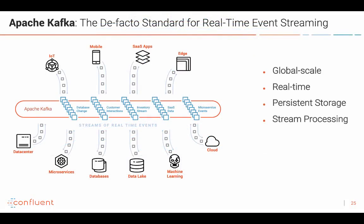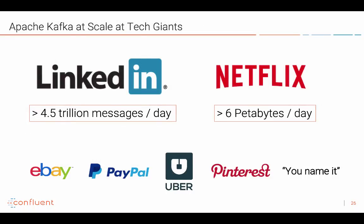Apache Kafka is the de facto standard for real-time event streaming. It's an Apache framework, open source under the Apache license — you can change it, run production at scale as much as you want. It's for global scale, real-time processing. Very important to understand: Kafka is not just a messaging layer. It's also a storage layer — Kafka stores the data as long as you want. And it's also a stream processing engine, so you can process data with Kafka without any additional tools or components. Kafka is battle-tested, almost 10 years old. LinkedIn processes over 4.5 trillion messages per day, Netflix processes over 6 petabytes of data per day. You can Google any tech company from Silicon Valley and find how they use Kafka at scale for 24-7 deployments.